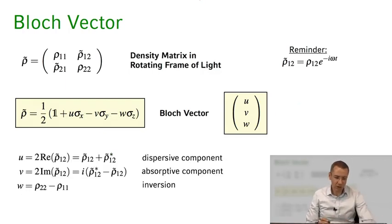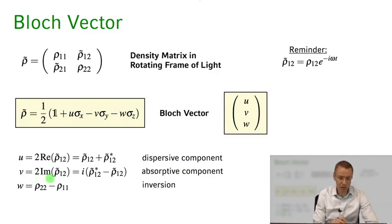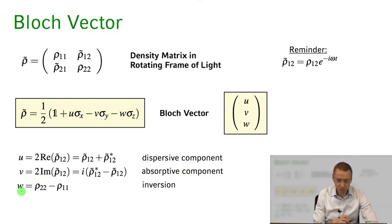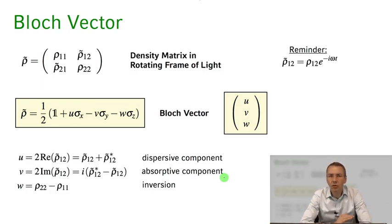With this sign convention, the Bloch vector components are very simple to express. u is just two times the real part of rho-1-2-tilde. v is just two times the imaginary part of rho-1-2-tilde. And w is the inversion, rho-2-2 minus rho-1-1. u is called the dispersive component of the Bloch vector, and v is called the absorptive component. We'll see in the next lecture why they are named this way and what they have to do with absorption and dispersion.